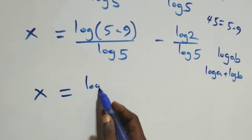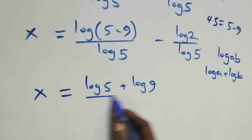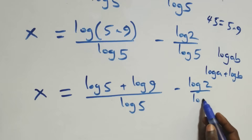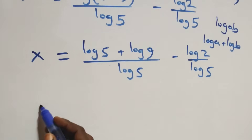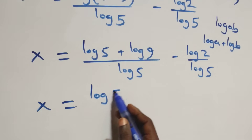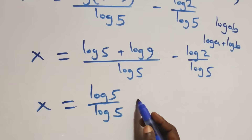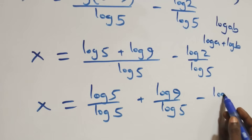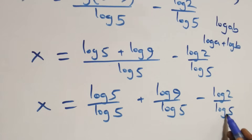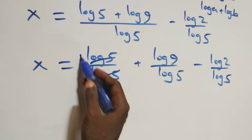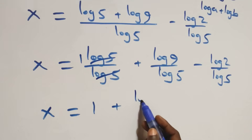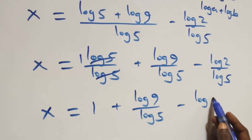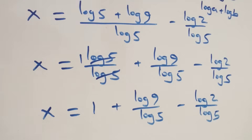We expand log(5×9) as log 5 plus log 9, all over log 5, minus log 2 over log 5. Then we separate this into two fractions: x equals to log 5 over log 5 plus log 9 over log 5 minus log 2 over log 5. Log 5 over log 5 cancels to give 1, which implies x equals to 1 plus log 9 over log 5 minus log 2 over log 5.